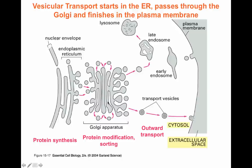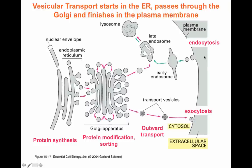Once proteins destined to the plasma membrane are packed into vesicles, they move through microtubules towards the Golgi apparatus, where they will have further modifications like additional glycosylations, and they will be sorted for their final destination. On their way to the plasma membrane, those vesicles will travel along the microtubule network and finally reach the plasma membrane, where they will be exocytosed. On the other hand, vesicles being formed at the plasma membrane by endocytosis will be carried along microtubules into early endosomes and eventually fused with a lysosome, where the content of the vesicles will be degraded.